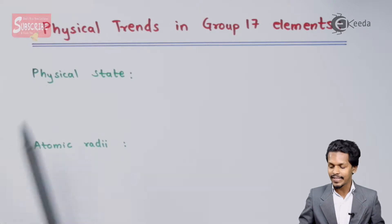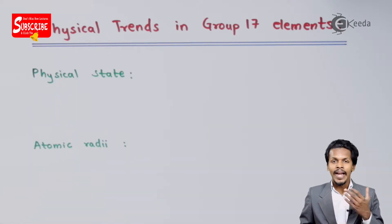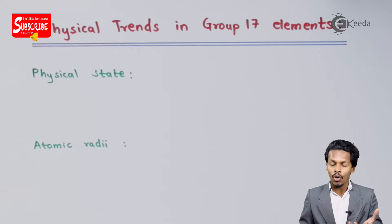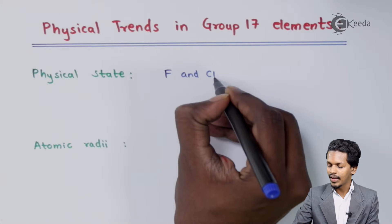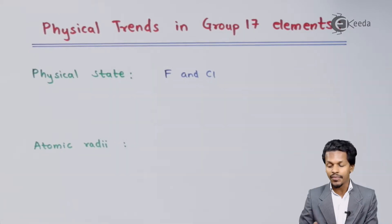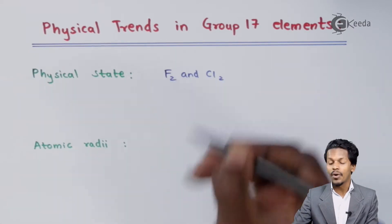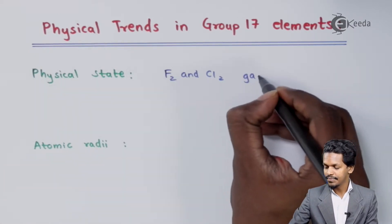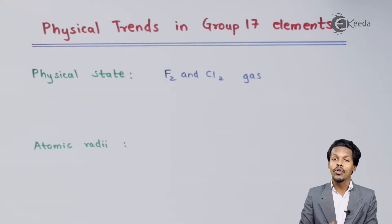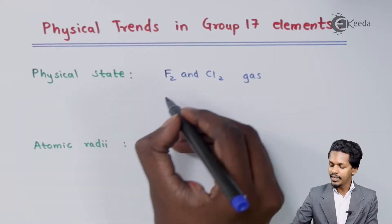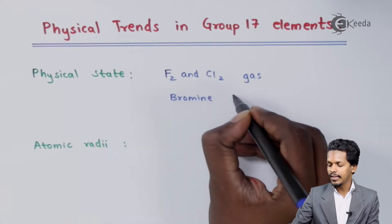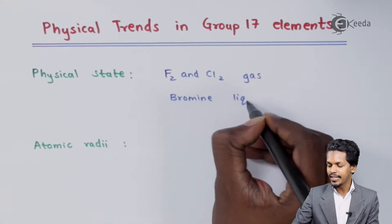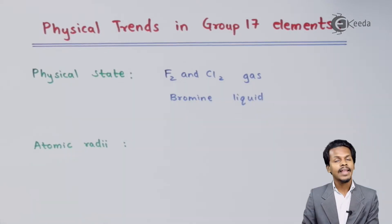Starting with the first point — physical state. The halogen family consists of five elements. Fluorine and chlorine, in their molecular form, exist as gases. Bromine exists in the form of a liquid state.